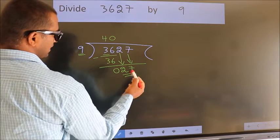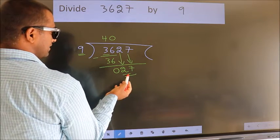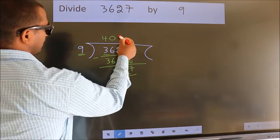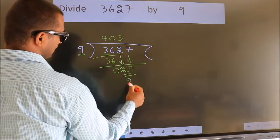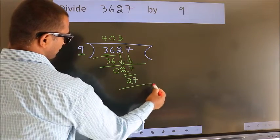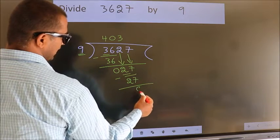So, 27. When do we get 27? In the 9 table, 9 times 3 is 27. Now, we subtract. We get 0.